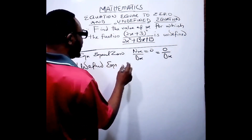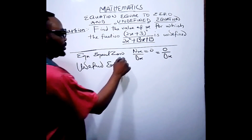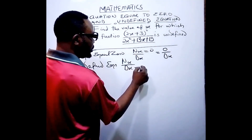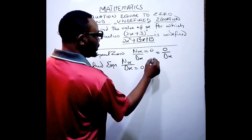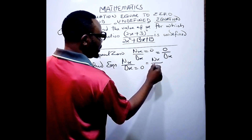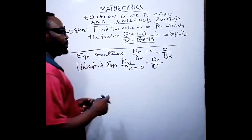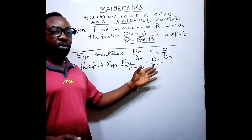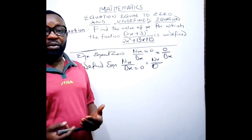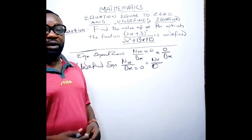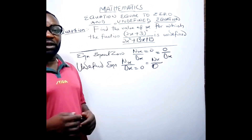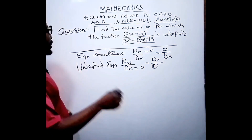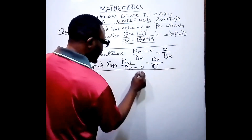For undefined equation — a fraction being undefined — it is the denominator that will be equal to zero, which means you are going to have x over zero. So you are going to simplify the value of the denominator, make it equal to zero, then simplify it accordingly and provide the answer.